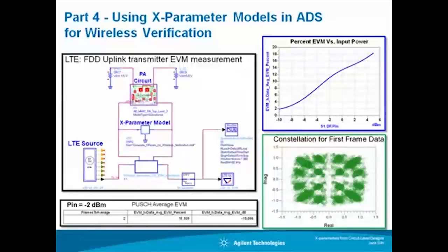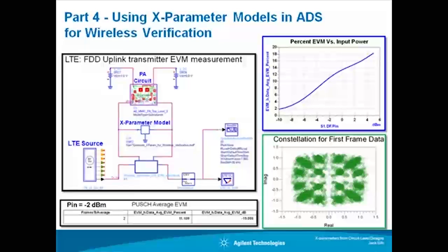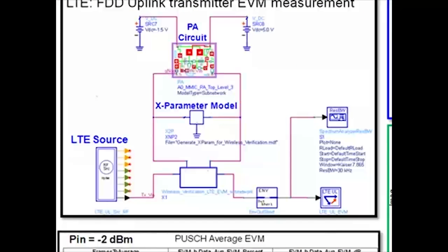In order to accurately determine the linearity of systems or circuits that are excited with fully modulated sources, wireless verification tests are commonly used. Trajectory, constellations, and spectral displays along with measures such as ACLR, power added efficiency, and EVM are typical specs that are used in such analysis. This video demo illustrates how the X parameter model is used in place of the circuit level PA to perform accurate EVM wireless verification tests with much faster simulation speed.